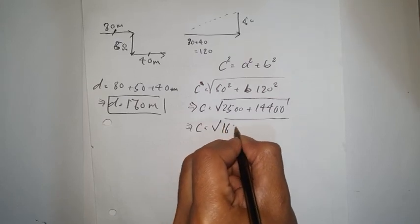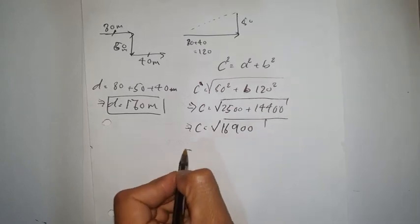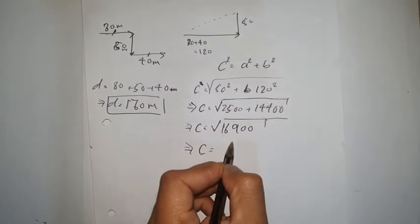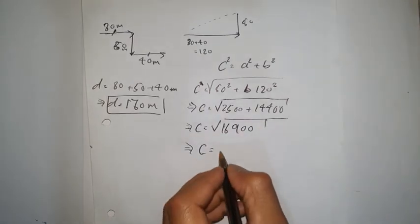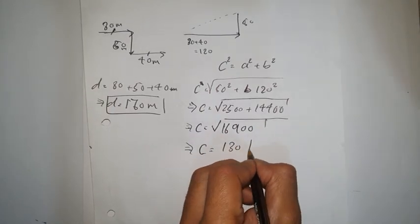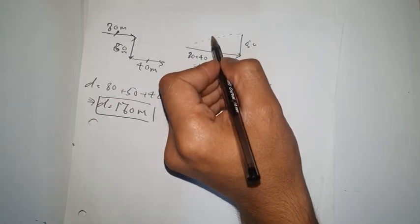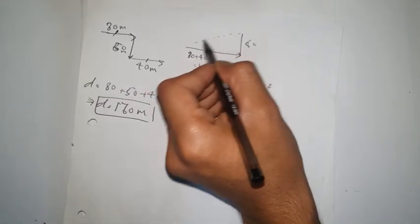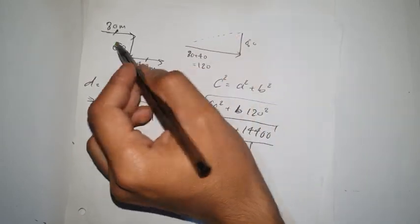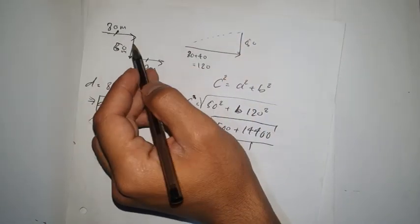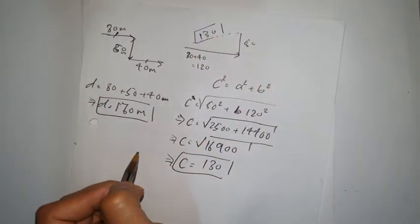Adding 2,500 and 14,400 gives 16,900. Taking the square root of 16,900 equals 130. So the displacement for this person is 130, and that's it for this example.